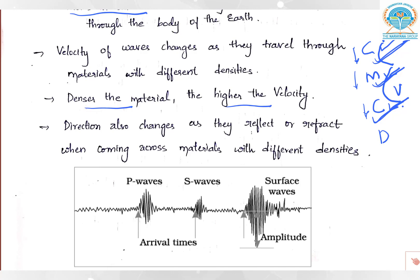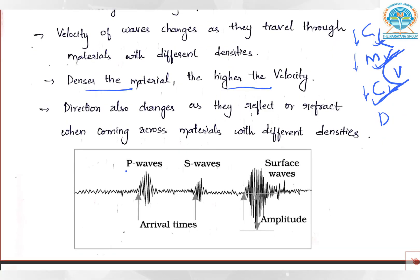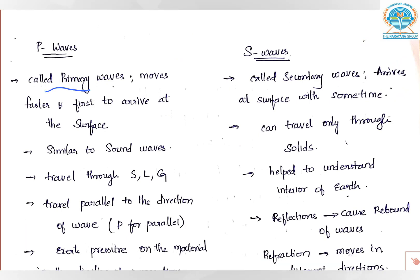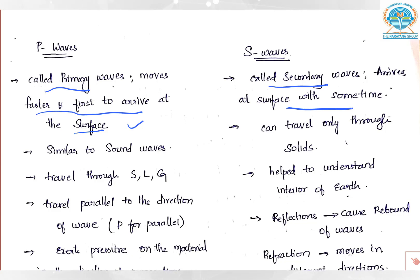P waves are also called primary waves and S waves are called secondary waves. P waves arrive faster and are the first to arrive at the surface; S waves arrive after them. The key speciality of P waves is that they can travel through all mediums — solids, liquids, and gases — just like sound waves. S waves, however, can travel only through solids. This is the most important differentiation and from this only we learn about the interior structure of the earth.